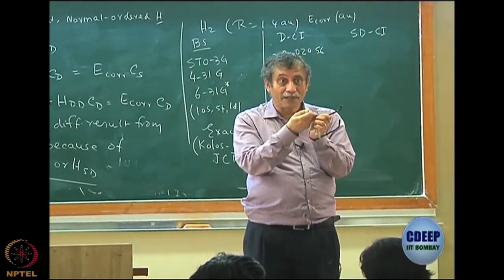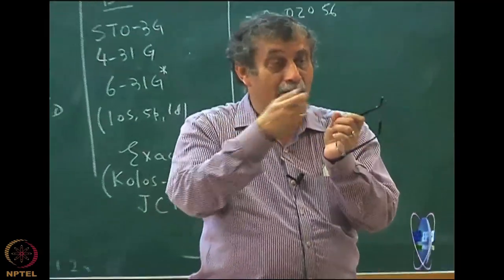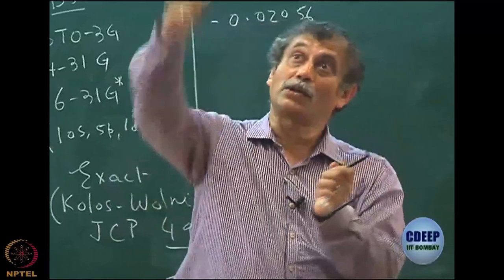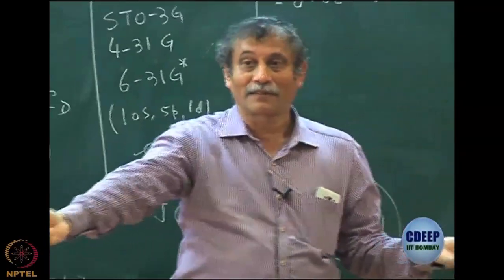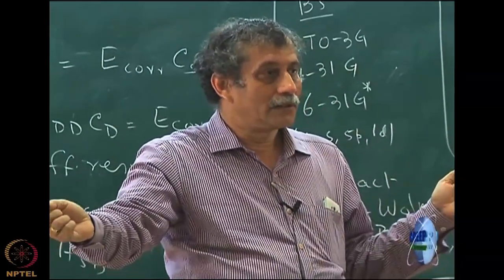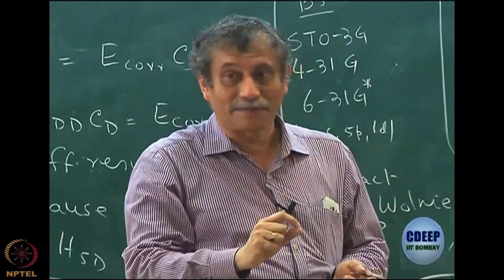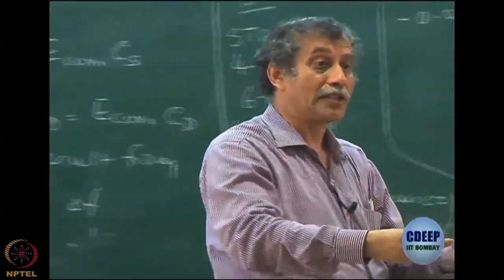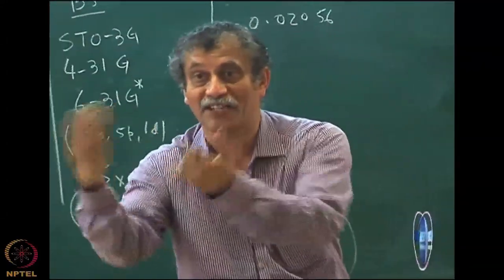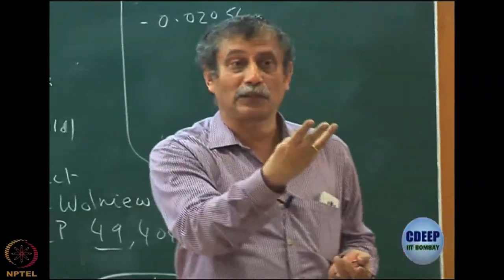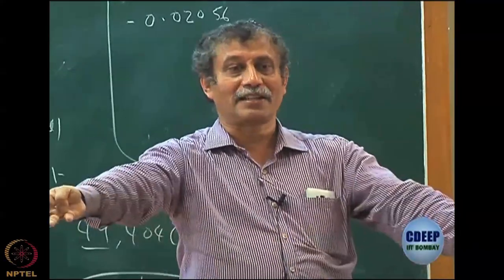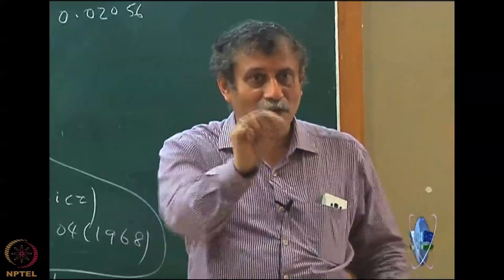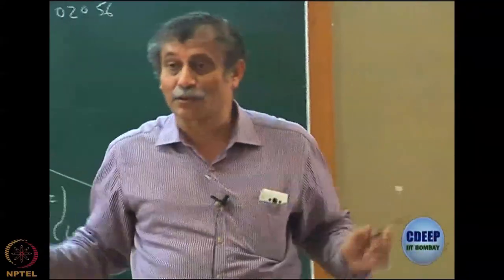For CH3, breaking to CH3 minus and H+ requires ionizing hydrogen, which costs about 1200 kilojoules — that kills the calculation. In solution it is completely different because the ions get solvated. If you do a gas-phase calculation versus one with ionic solvent, you will immediately see how the deprotonation energy drops down.